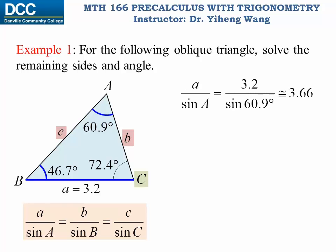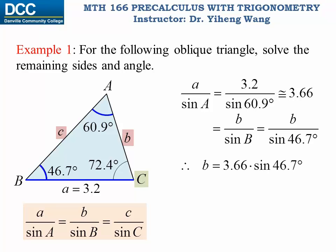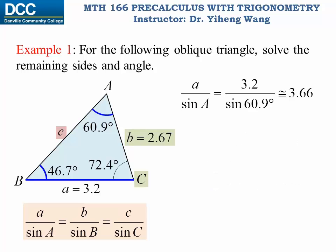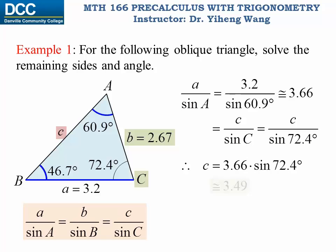The ratio between side a and sine angle A is approximately 3.66. We equate that to side b over sine angle B. Since side b over sine 46.7 degrees equals 3.66, we can solve for b to be approximately 2.67. Then, applying the law of sines again, side c over sine angle C also equals 3.66, so we can solve for side c to be approximately 3.49. Now this triangle has been fully solved — we know all six measurements associated with it.